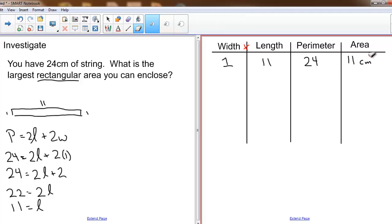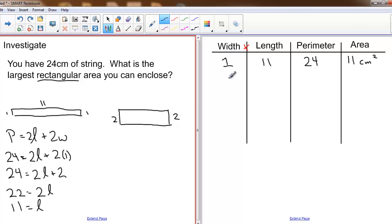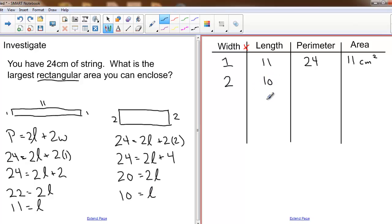But again, that's not the only rectangle I can make. I can make another rectangle that has a width of two on both sides and a length that, well let's see if I can solve for the length: 24 equals two times the length plus two times two. 24 equals two times the length plus four. Rearranging and solving for the length, I should end up with a length of 10. And again finding the area, width times length, 2 times 10 is 20 centimeters squared. So now I've made two different rectangles that have two different dimensions, same perimeter but different areas.